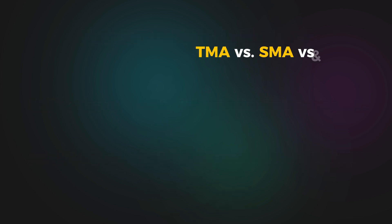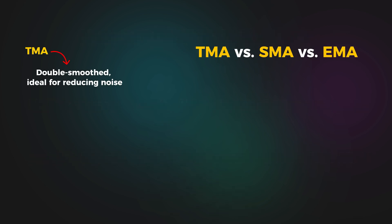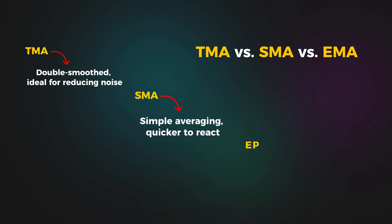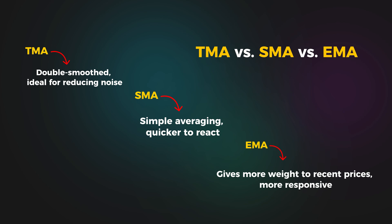Unlike the simple moving average and the exponential moving average, the triangular moving average emphasizes long-term price behavior by averaging the averages, making it less sensitive to short-term price movements and more effective in reducing noise.